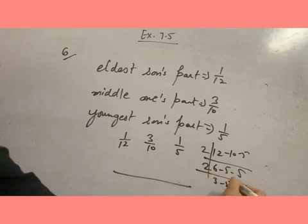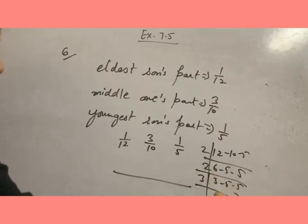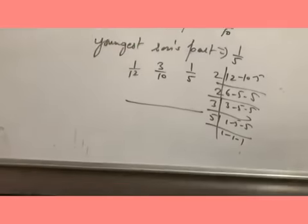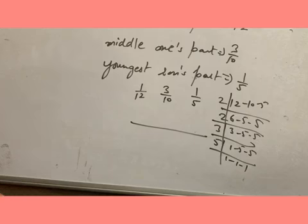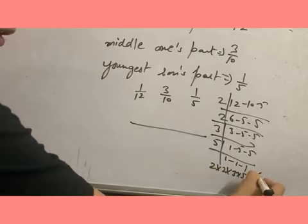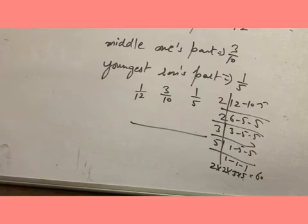Then it will be like 2 into 2 into 3 into 5, so that will be 60. Now so here we will write 60.